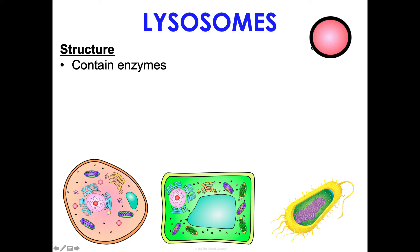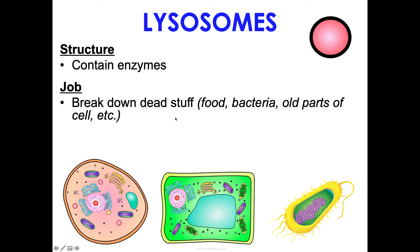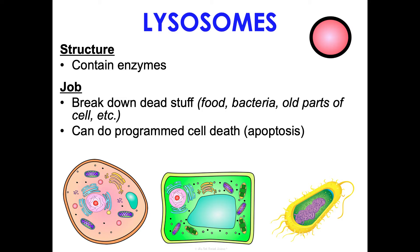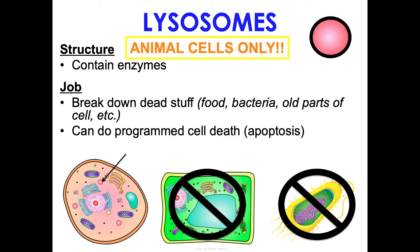Lysosomes are non-distinct organelles that contain enzymes — proteins that speed up biochemical reactions. They break down waste, invading bacteria, and worn-out cell parts. They can also help the cell carry out apoptosis, which is programmed cell death — the cell signaling itself to die, which can actually be beneficial, as we'll discuss in concept three. Lysosomes are only in animal cells, not in plant cells or bacteria, though there is some debate among cell biologists about certain plant cells.